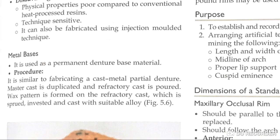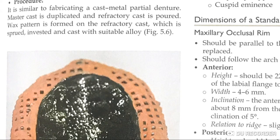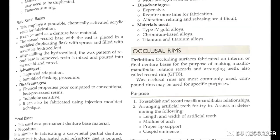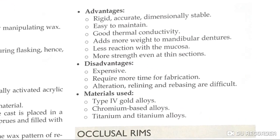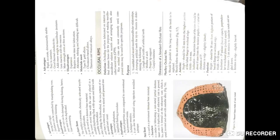Metal bases are used as permanent denture base material. The procedure is similar to fabricating cast metal partial denture frameworks: a master cast, refractory cast is poured, a wax pattern is formed on the refractory cast, then invested and cast with suitable alloys. Advantages include being rigid, accurate, dimensionally stable, easy to maintain, good thermal conductivity, more strength, and less reaction with mucosa. Disadvantages are that it is expensive, time-consuming, and alteration, relining, or rebasing is difficult. Materials used include type 4 gold alloy, chromium-based alloy, titanium and titanium alloys.